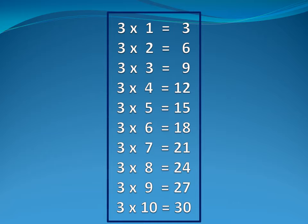Now three tables. Three one is three. Three two is six. Three three is nine. Three four is two. Three five is fifteen.